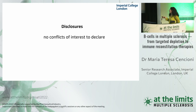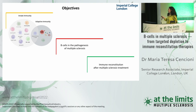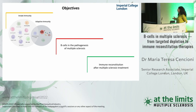This slide shows my disclosures. The talk includes three parts: the role of B cells in adaptive immunity, the abnormality of B cells in multiple sclerosis, and the last part, the immune reconstitution after multiple sclerosis treatment.